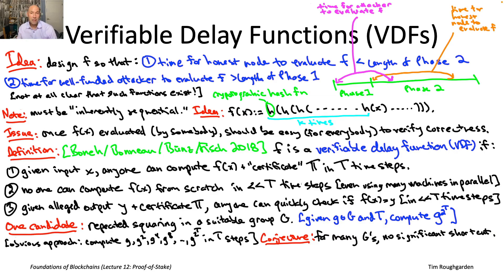And that is conjectured, in fact, to be the case. So that conjecture is a necessary condition for there to exist verifiable delay functions based on this repeated squaring idea.